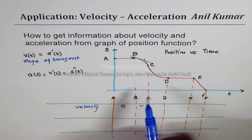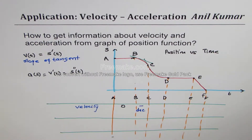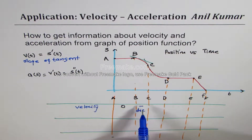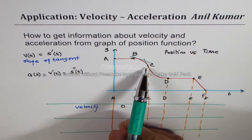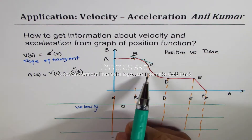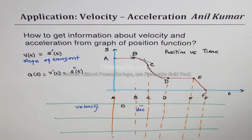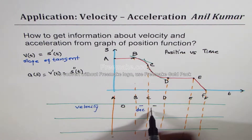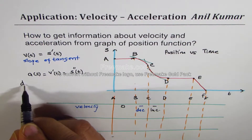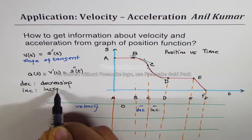From b to c, the velocity is negative and it is decreasing — becoming more and more negative. At point c, the concavity changes, so that is called a point of inflection, which we'll discuss with acceleration. After c, from c to d, the velocity is still negative but not as negative — it is increasing in that portion.